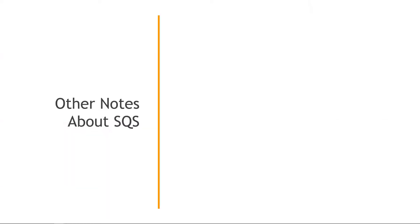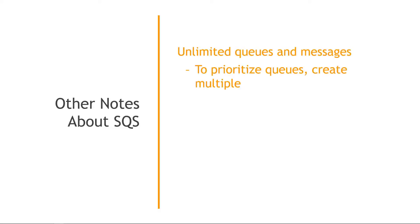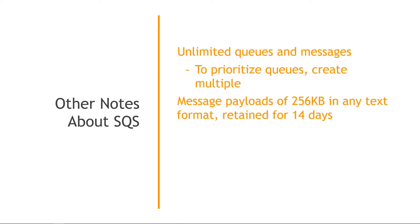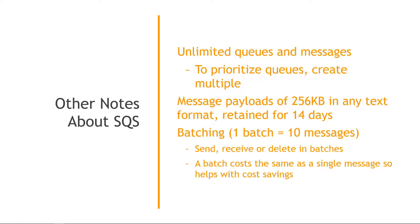A few other notes about SQS: it allows unlimited queues and messages. If you need to prioritize queues, you'll need to create multiple queues and manage which one to send to or receive from first — there's no priority setting within a single queue. Message payloads can be up to 256KB in any text format and are retained for up to 14 days. Batching is an option where one batch equals 10 messages, and from a cost perspective a batch counts the same as a single message.